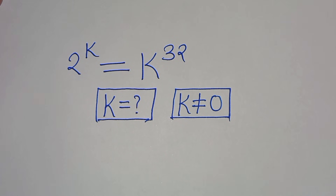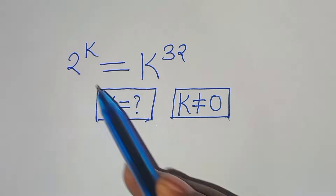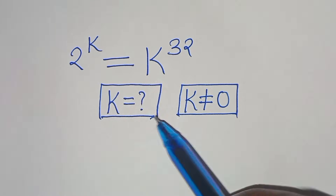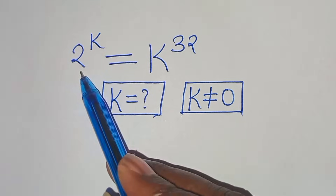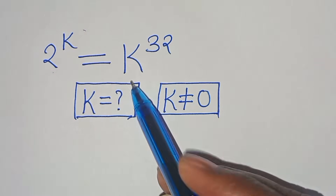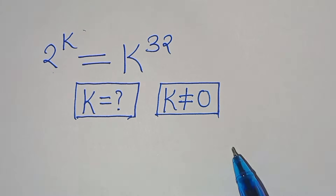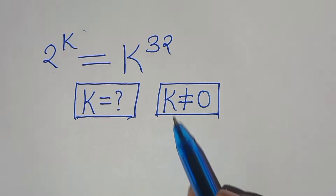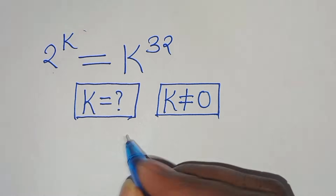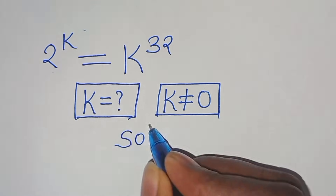Welcome. We are going to solve for the value of k given the exponential equation 2 to the power of k equals k to the power of 32, where k is not equal to 0. Let's provide a solution.